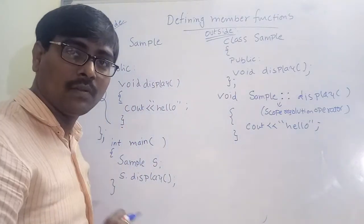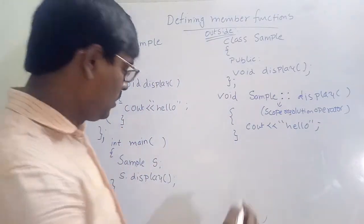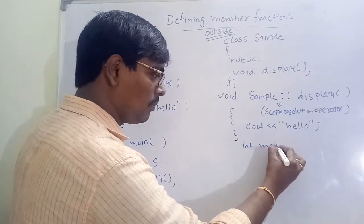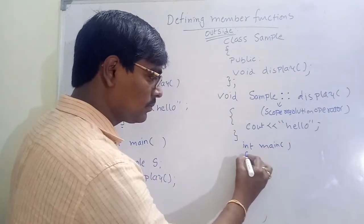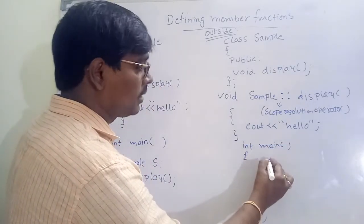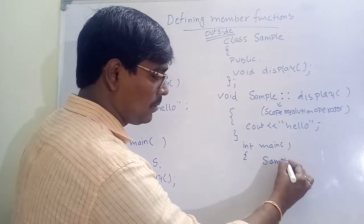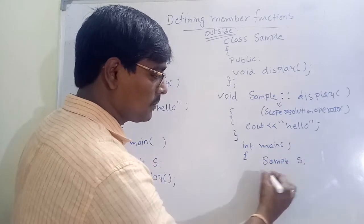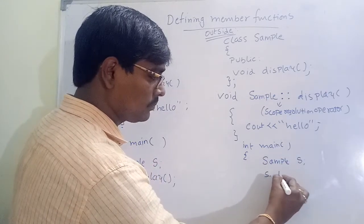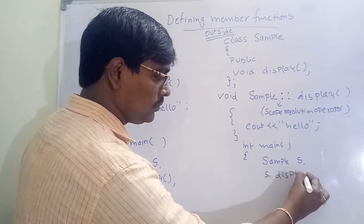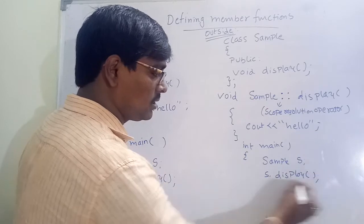This is the way to define outside, and the remaining procedure is the same. In int main, create an object — Sample s — then call s.display(). Observe carefully: outside the class, instead of writing the full definition inside, I am writing only the declaration inside the class, and the definition is written outside.